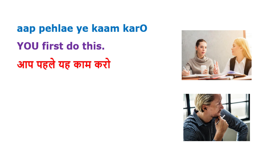The next phrase is aap pehle ye kaam karo. Imagine a girl talking to another girl or to a man — in both cases, from this phrase alone you cannot tell if it is a man or woman being addressed. Notice there is no ho here; instead it is karo — aap karo, meaning 'you do.' Theoretically it should be aap kariye or aap kijiye, but in conversational Hindi it becomes aap karo — aap pehle ye kaam karo, meaning 'you first do this job.'